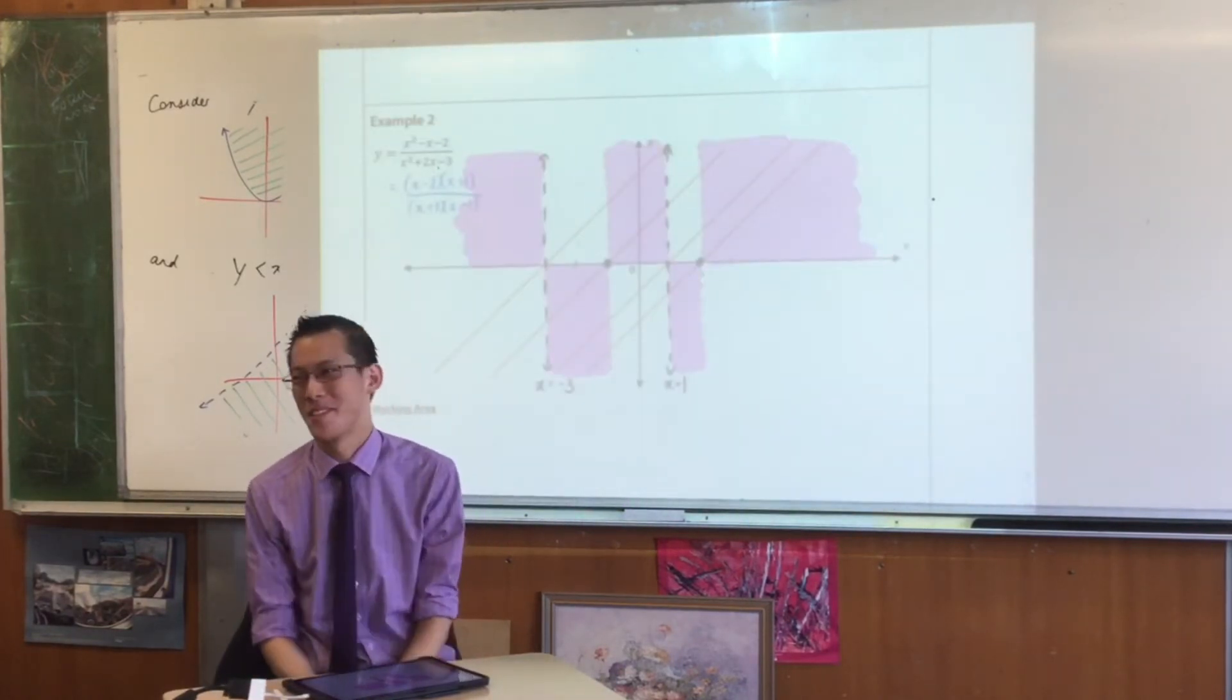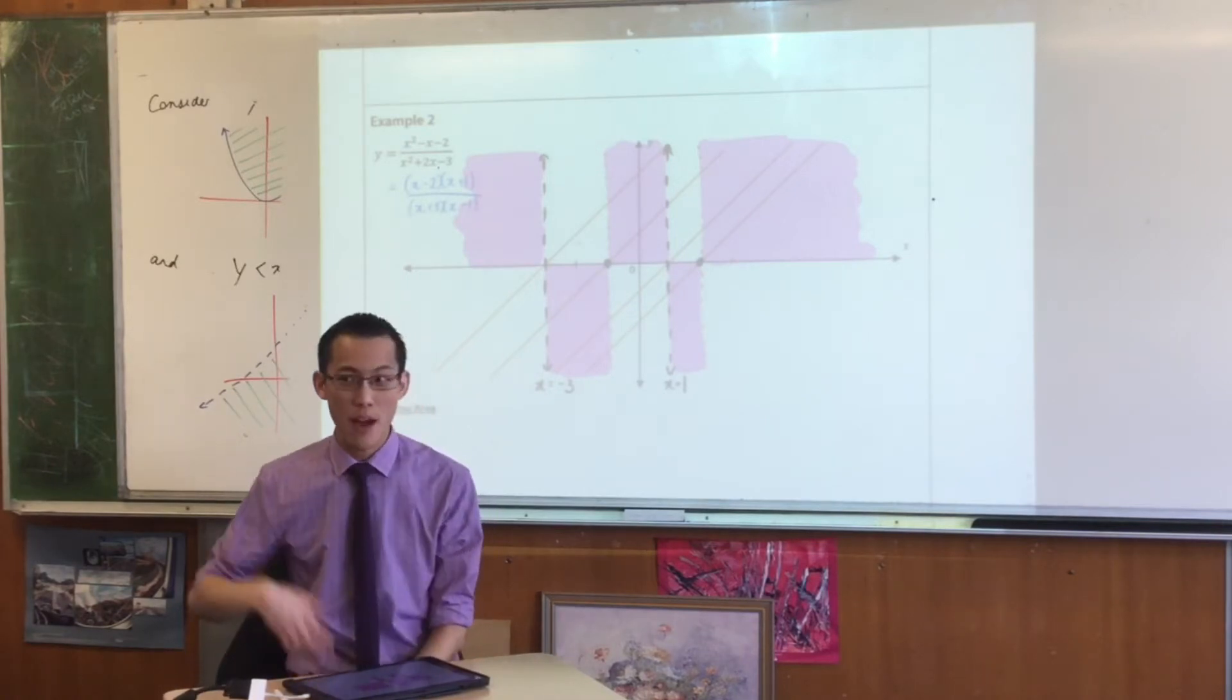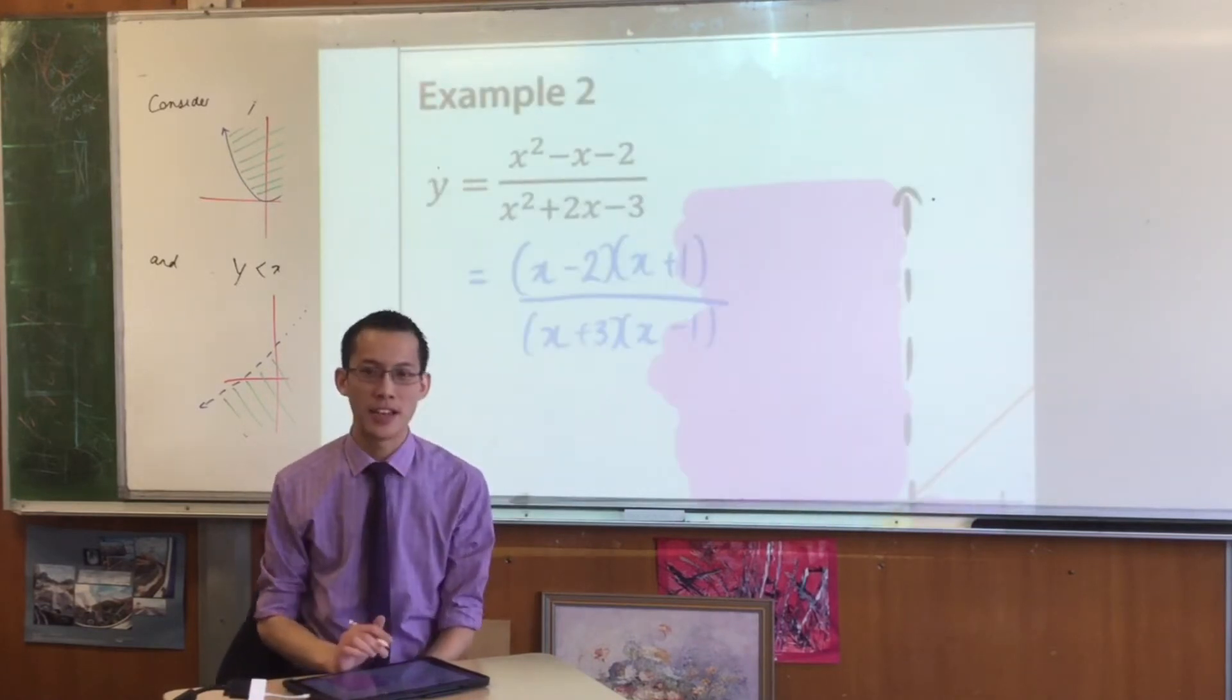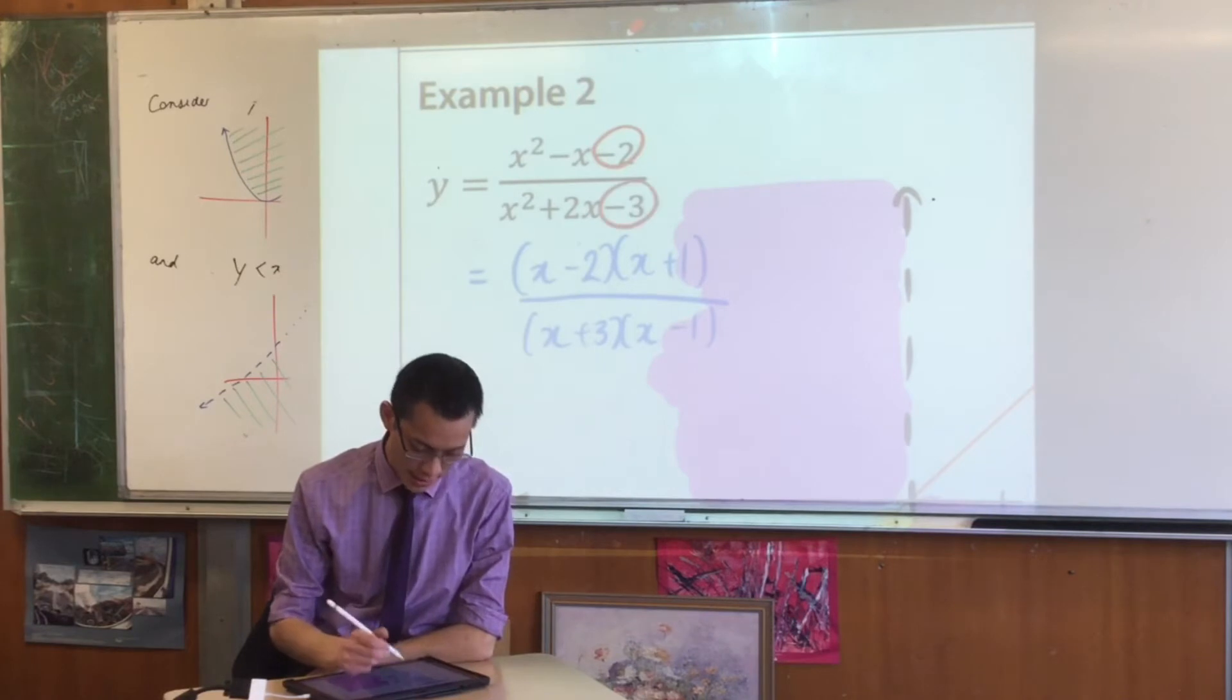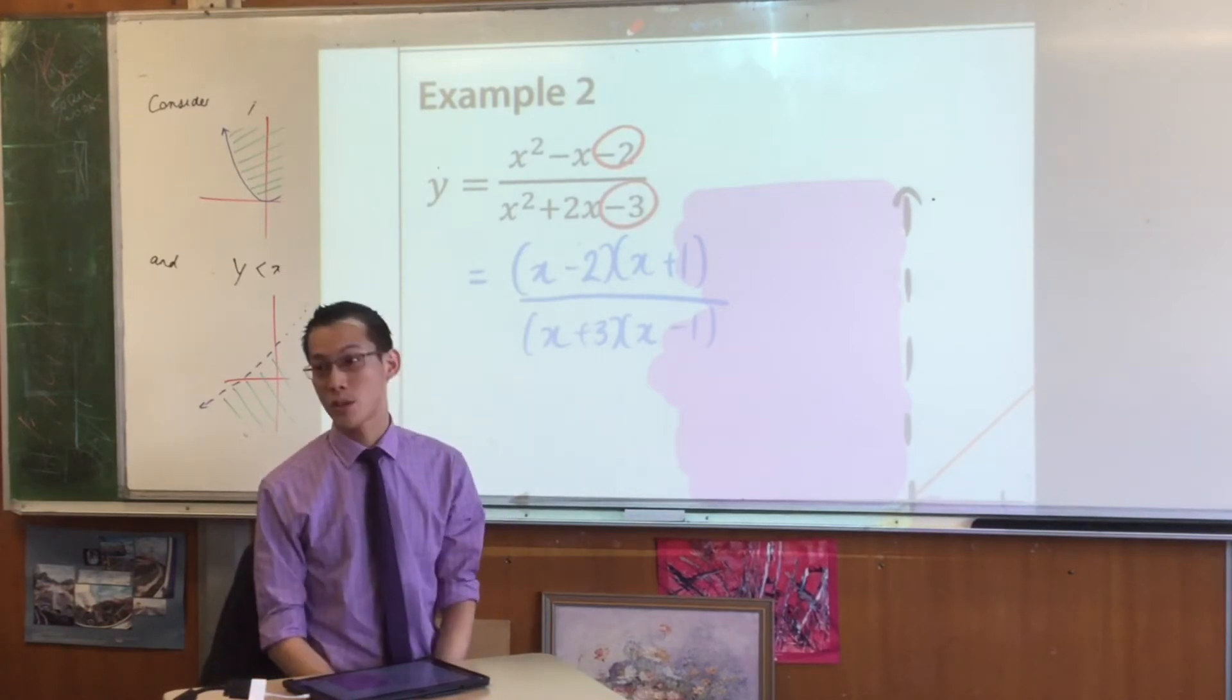But this one isn't one of them. Think again about your limits, think again about what happens as x gets really really big, when x approaches infinity. How important are these numbers here, negative two and negative three? They are not important at all. We call them trivial.